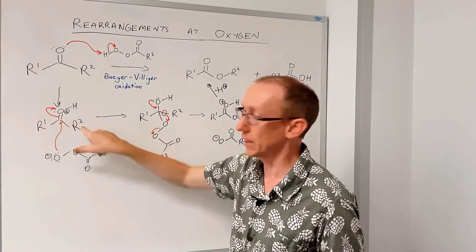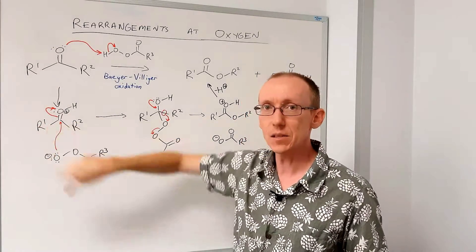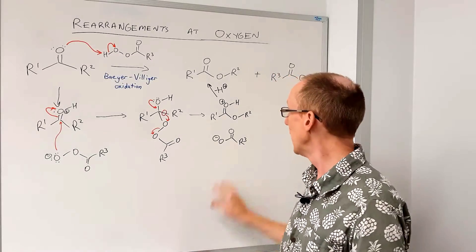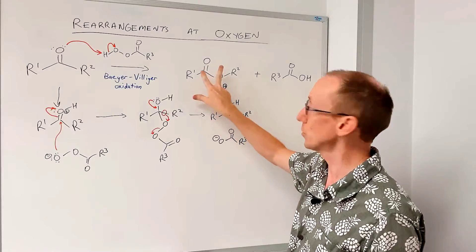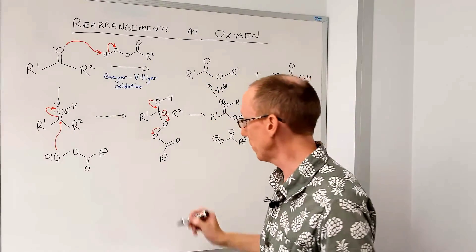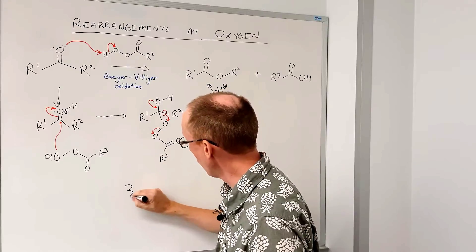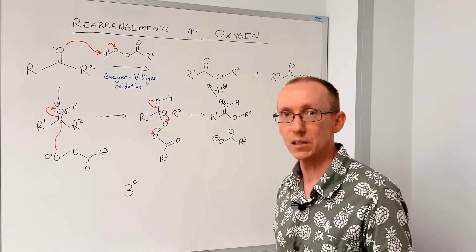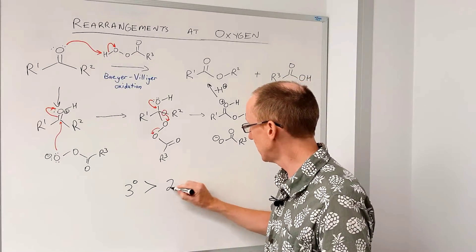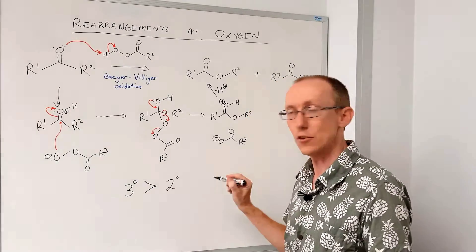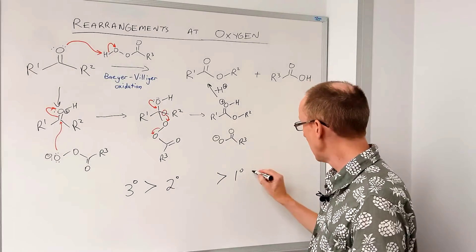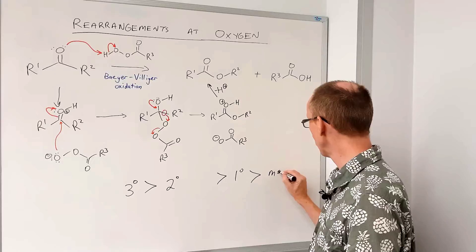There are two R groups in the case of a ketone. If it's an unsymmetrical ketone, there's a choice between which one of those groups will migrate, so you can get different possible products. The general rule of thumb is that we go in the order of carbocation stability: tertiary groups transfer more readily than secondary groups, which transfer more readily than primary groups, and last are methyl groups.